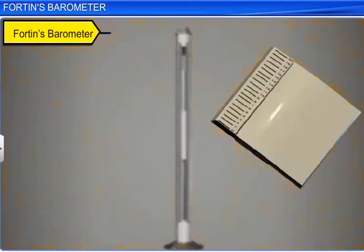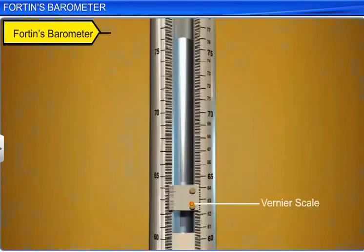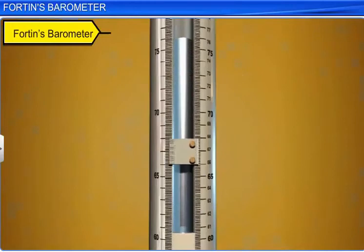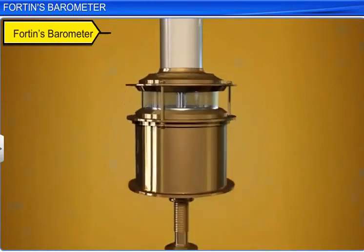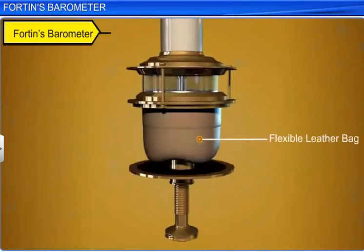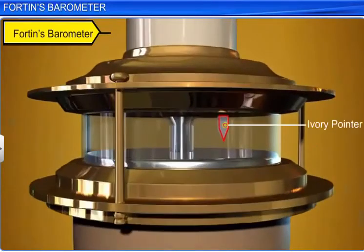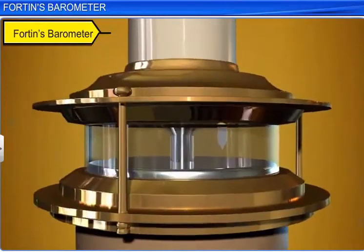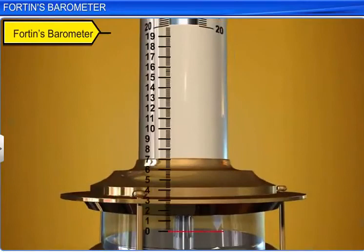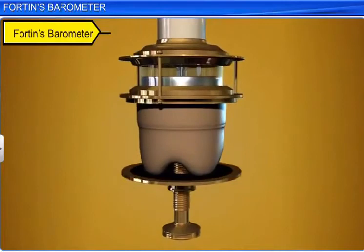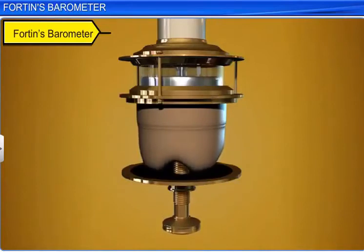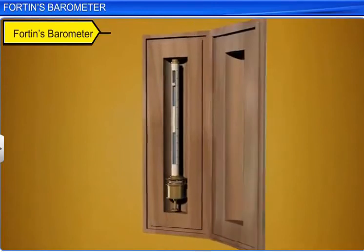For accurate measurement, a vernier scale that can slide over the main scale is fixed to the barometer and can be moved up and down using a screw. The bottom of the cistern is made of flexible leather, and the mercury level can be adjusted by a screw provided underneath. There is an ivory pointer in the cistern at the top, whose tip coincides with the zero of the main scale. The level of the mercury in the cistern is adjusted so that the ivory pointer exactly touches the mercury surface. The whole apparatus is fixed in a vertical position.